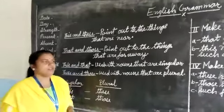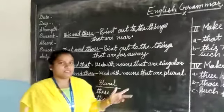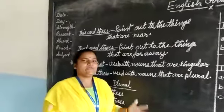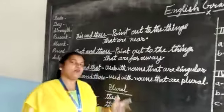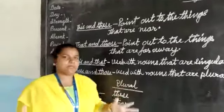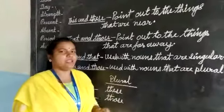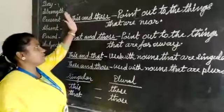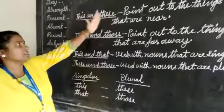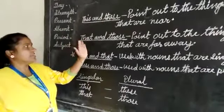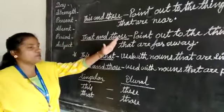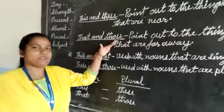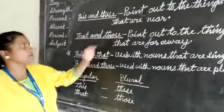Dear children, we were saying that demonstrative adjectives point out to a thing, person, place. We use these adjectives: this, these, that, and those. Now let us know something about these adjectives.